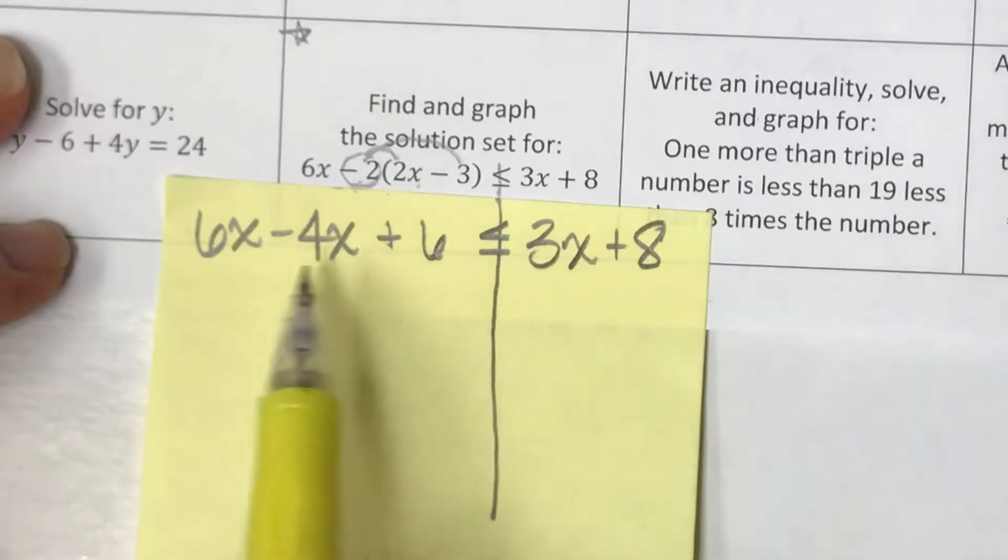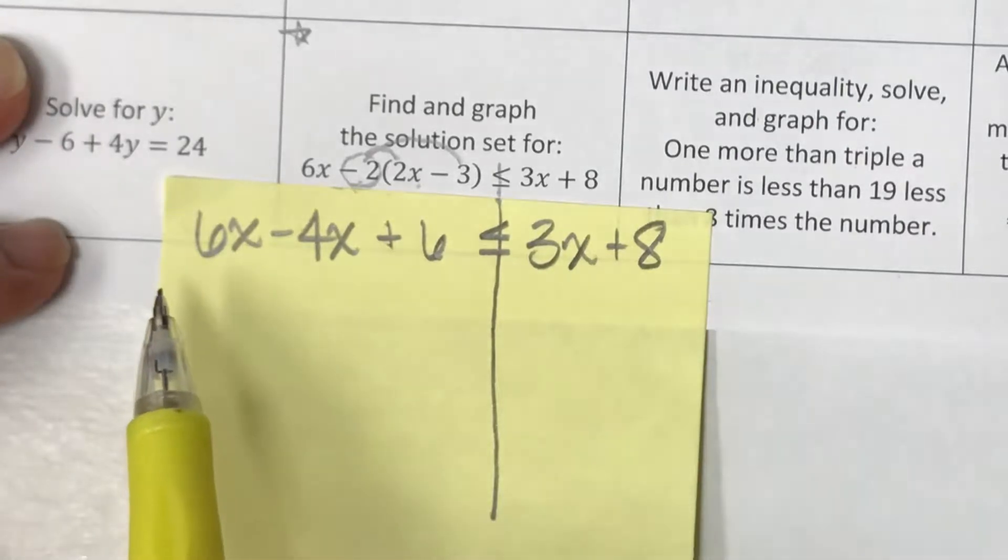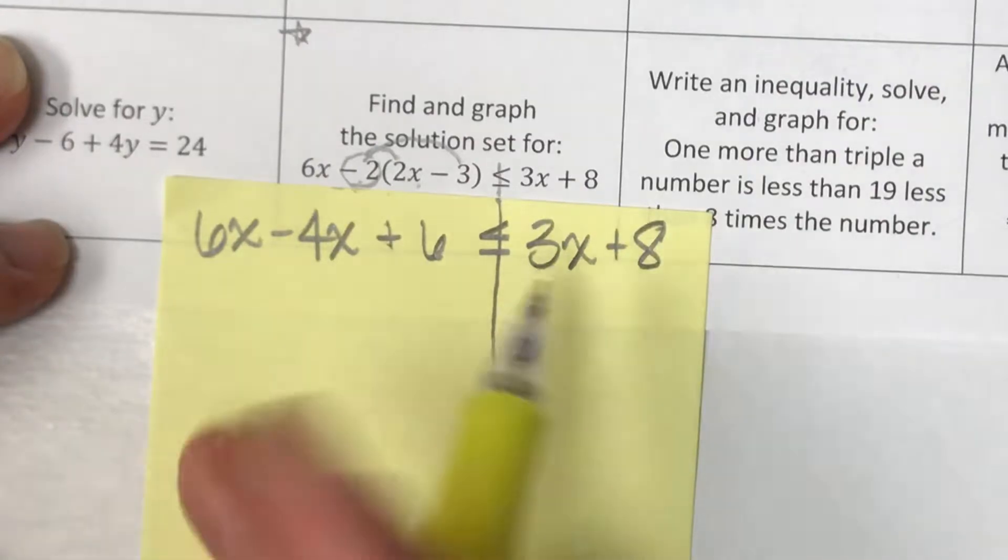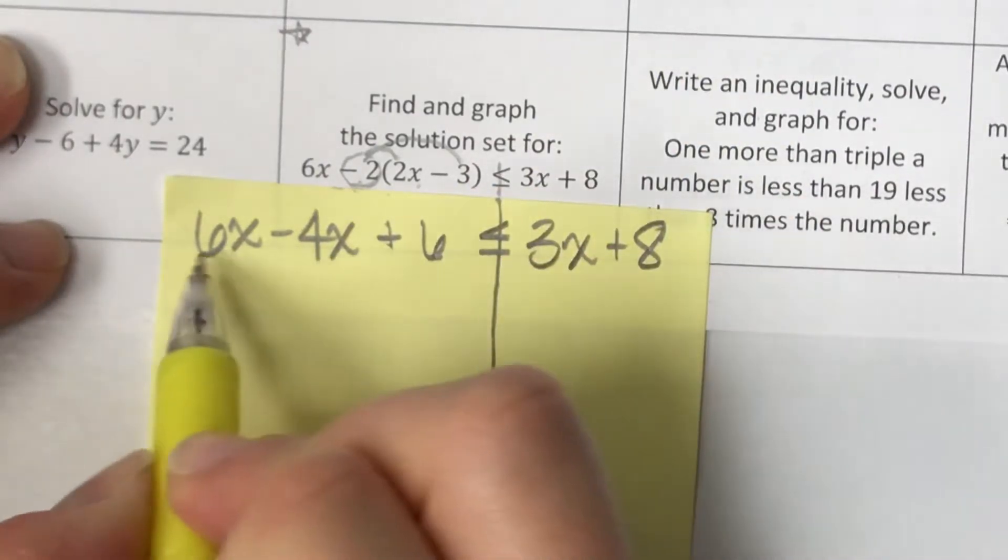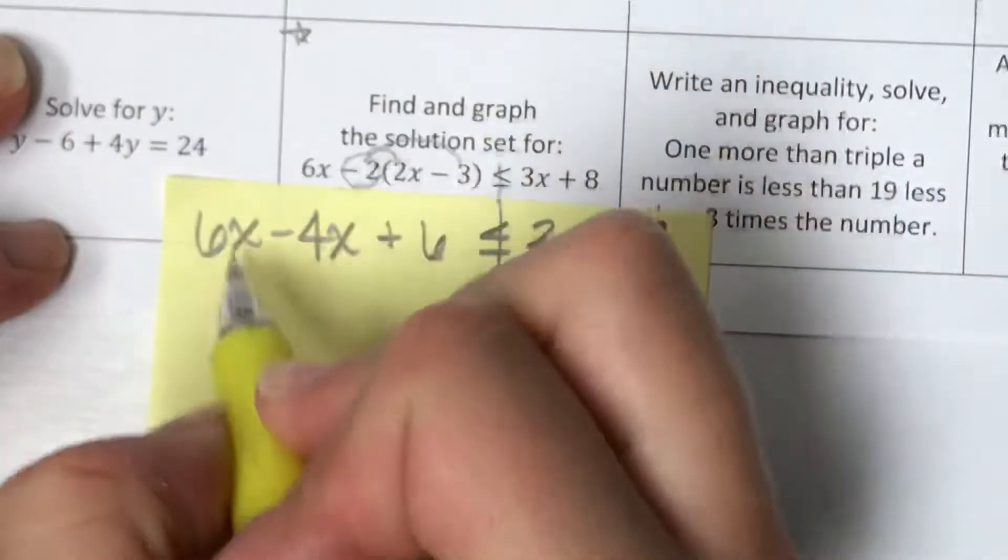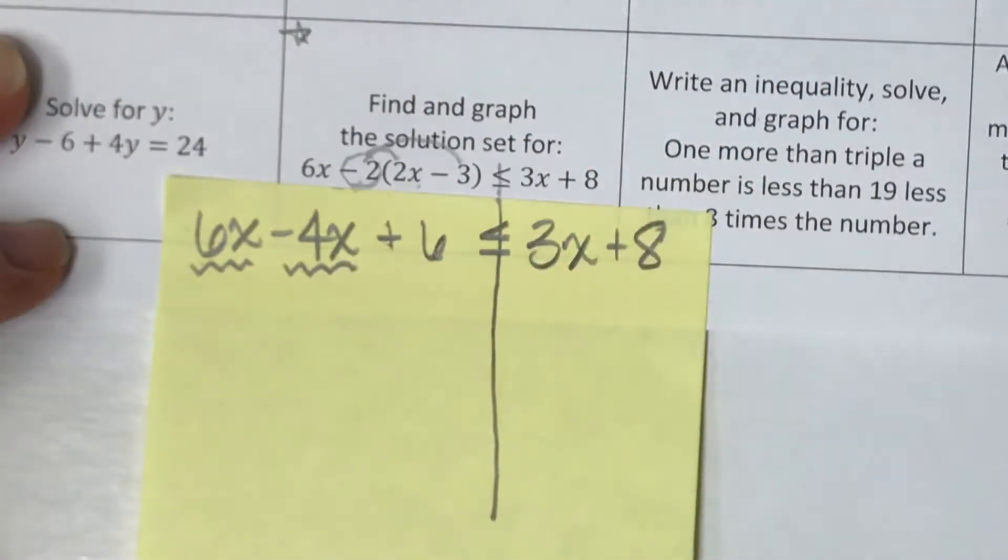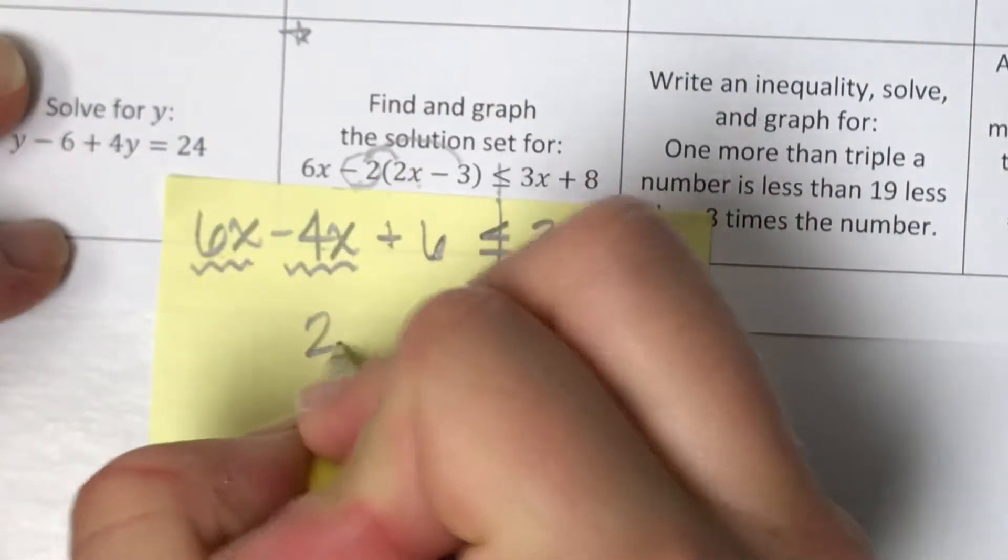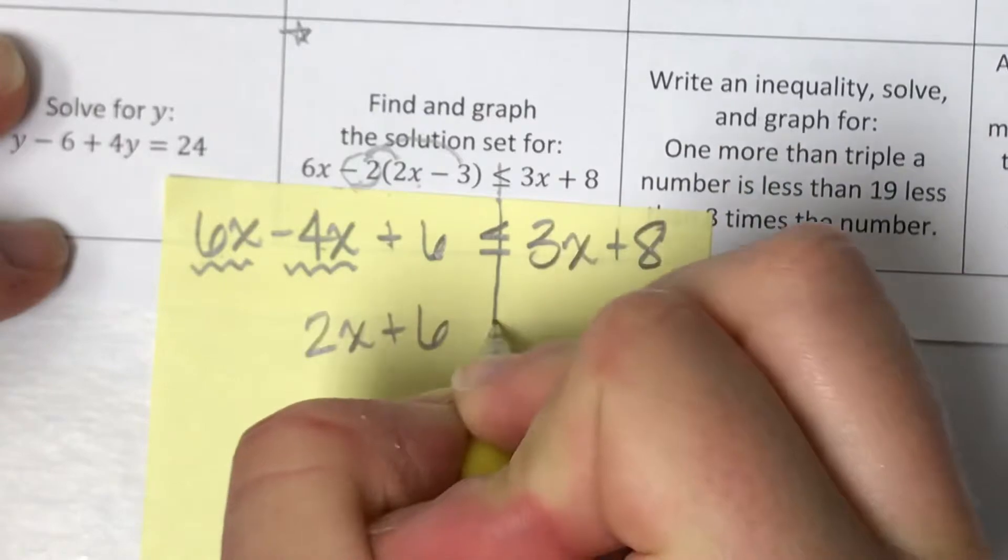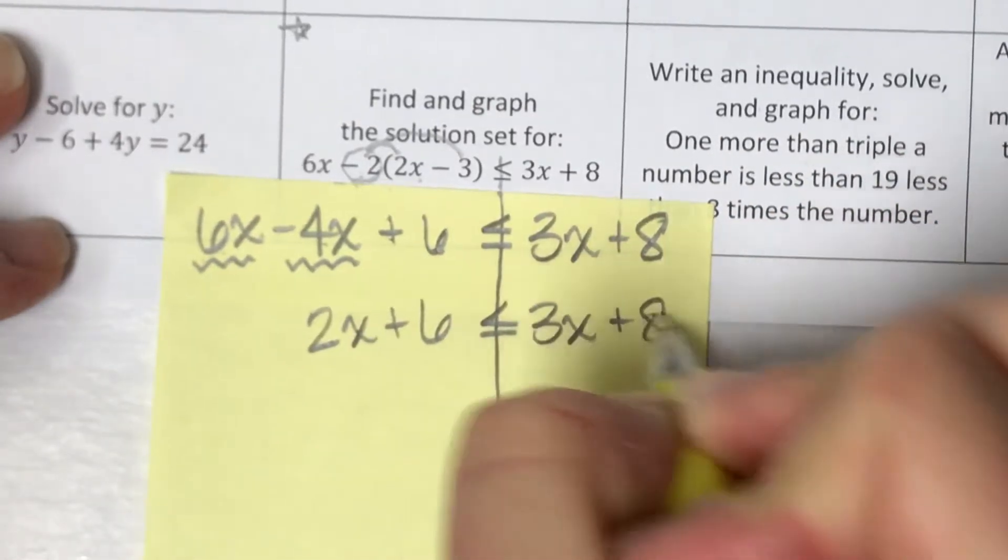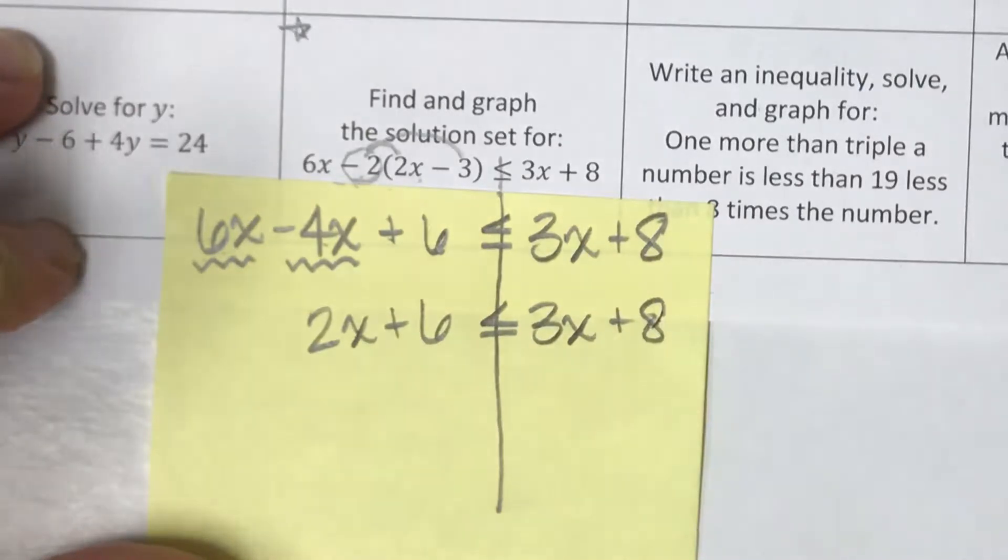I'm still going to look. And a lot of y'all are making this mistake. I'm not going to try and think about going across this equation yet because I can still clean this up. I'm not even looking at that side. Here, I can still combine 6x and negative 4x or 6x minus 4x makes 2x plus 6 is less than or equal to 3x plus 8. Now they're as simple as they get.